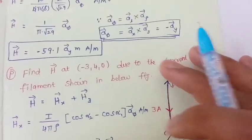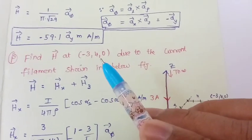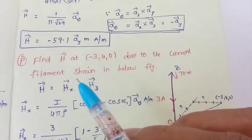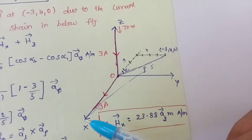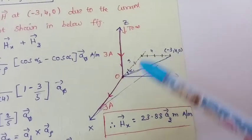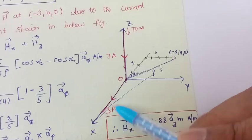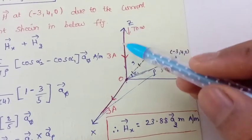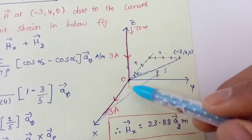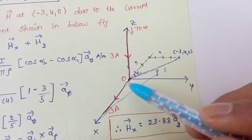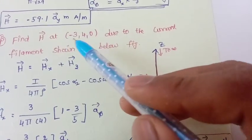Now observe this second problem carefully. Find the magnetic field intensity at (−3, 4, 0) due to the current filament shown in the figure. We have two conductors: one going to infinity in the positive x direction with 3 A, and another going downward in the negative z direction with 3 A. We find H due to each conductor separately, then combine them.